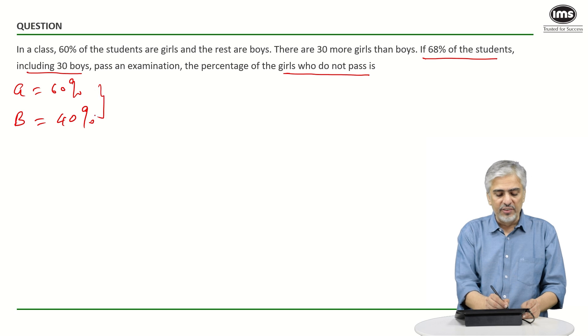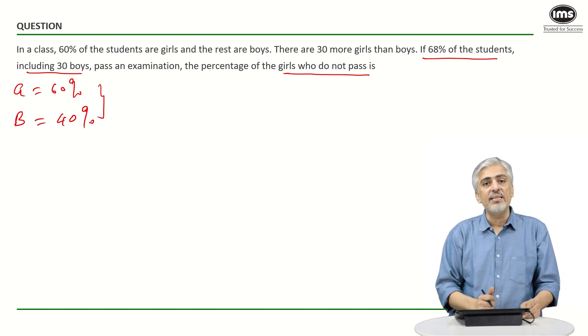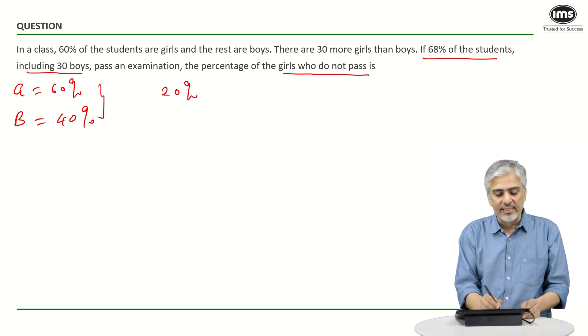First thing I can make out is that the difference is 20%. They are saying the difference in number is 30 students. So can I say 20% is the same as 30 students?